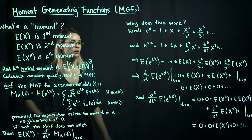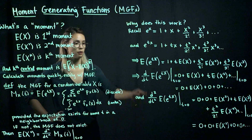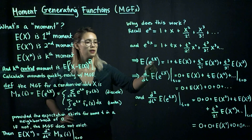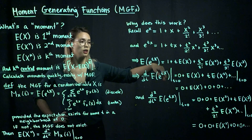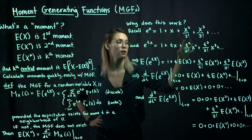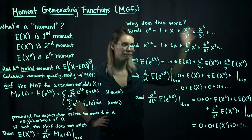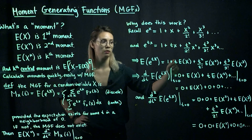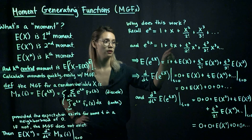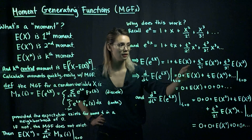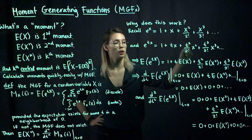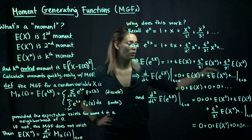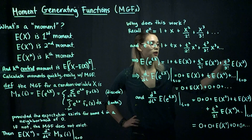So far we've just used a basic calculus statement, and now we're going to take the expected value with x being a random variable. We take the expected value of e to the tx. Since the expected value is linear, we can take the expected value of each term separately. The expected value of 1 is 1. The expected value of tx — since t is a constant — is t times the expected value of x. Then similarly, t squared over 2 factorial times the expected value of x squared, plus t cubed over 3 factorial times the expected value of x cubed, and so on.